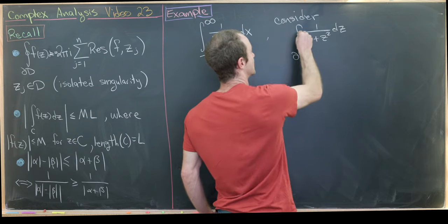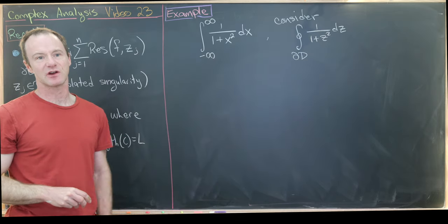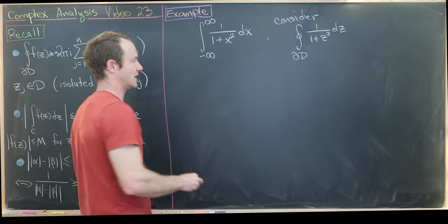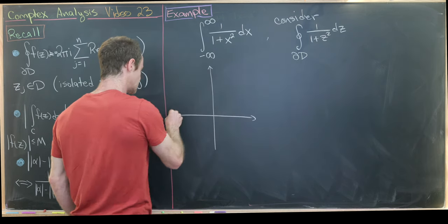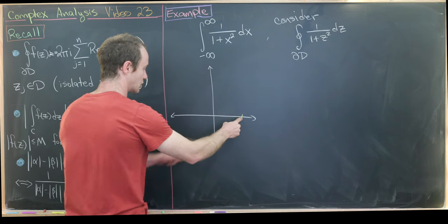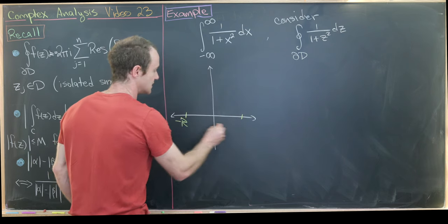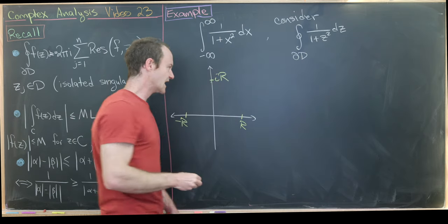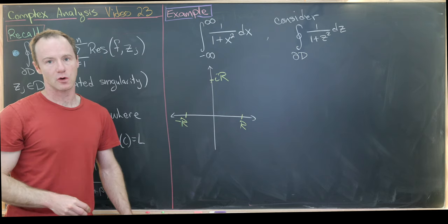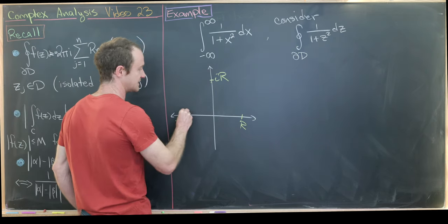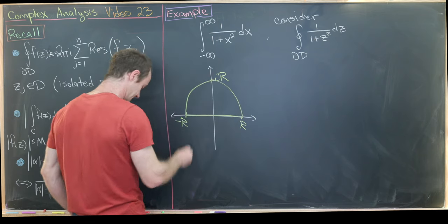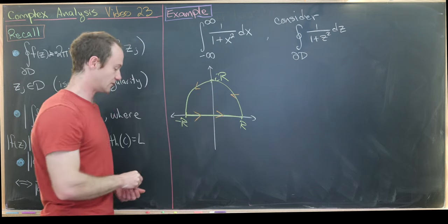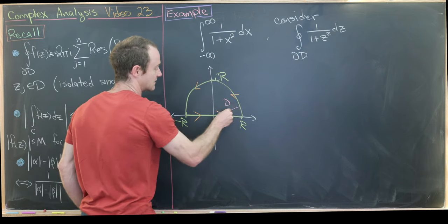This integral is over the boundary of some region D — we just have to figure out what that region is. The region we'll take is a semicircle in the upper half plane. So there's the complex plane: I'm going to draw a semicircle with radius R, with point −R on the left, +R on the right, and iR at the top. We orient it positively so the region D is the inside.